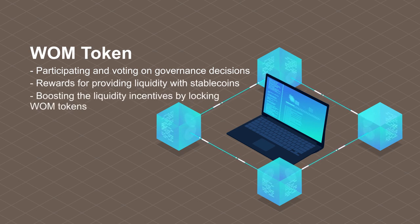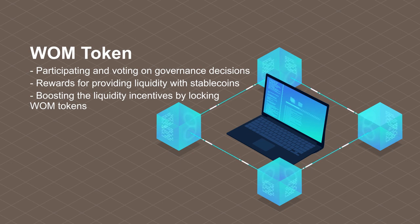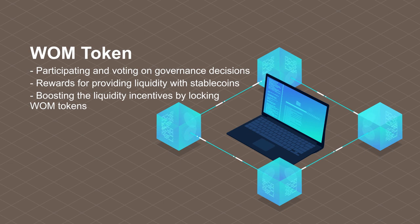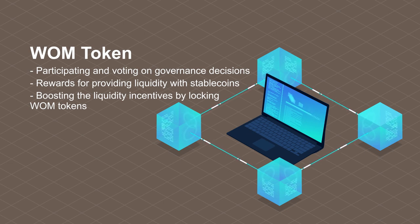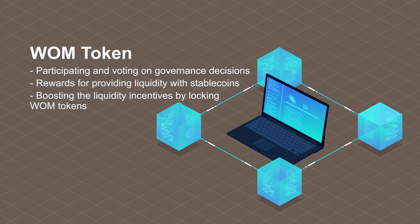Boosting the liquidity incentives is done by locking WOM tokens. The boost will be represented by voting escrow WOM, or VWOM. The longer the lock, the higher the VWOM and the bigger the rewards.